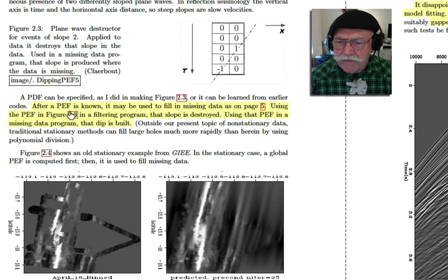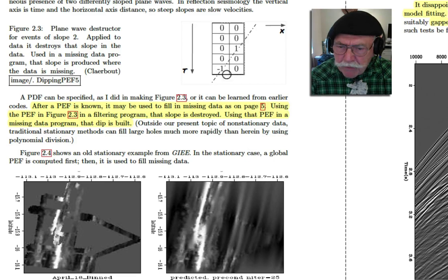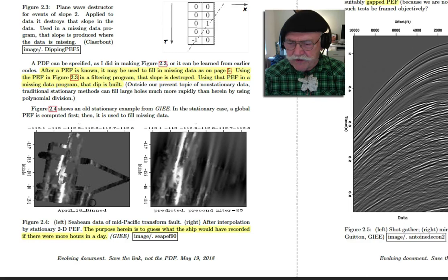After a PEF is known, it may be used to fill in missing data. That's what we did on page 5. Except here, we would just be doing it in two-dimensional space instead of one-dimensional space. If we use this, when we apply this filter to data, it destroys that angle. But if we use this PEF in a missing data problem, it creates this angle of propagation for the missing data. Isn't that nice? This is all the data that the ship could collect in one day and here we've just filled it in what it might have recorded had it continued to run.